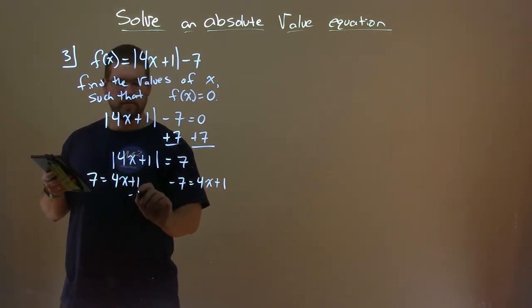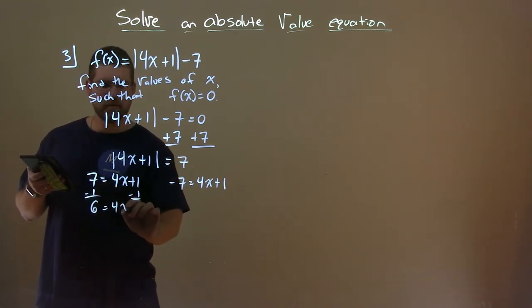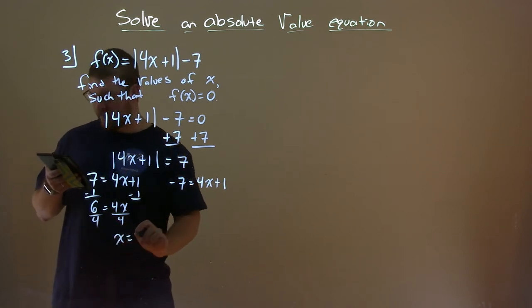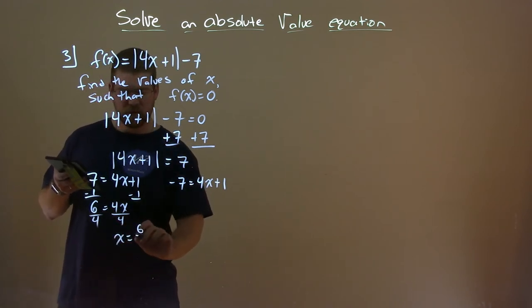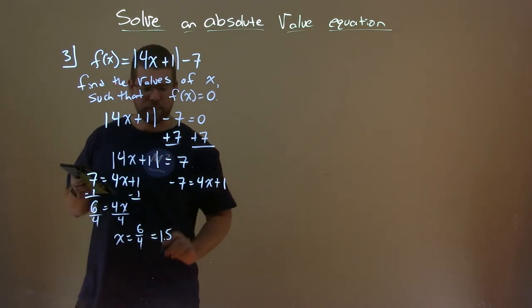Subtract 1 on both sides. You're left with 6 here equals 4x. Divide both sides by 4, and we get a final answer here of x equals 6 fourths, or 1.5.